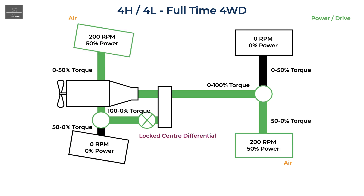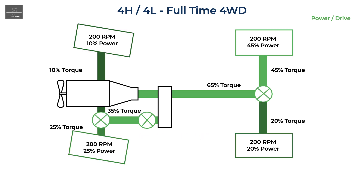Another example is a vehicle climbing a hill. With all differentials locked, say 65 percent of the torque is sent to the rear differential, which then splits at 20 percent to the rear left wheel and 45 percent to the rear right wheel. 35 percent of the torque is sent to the front differential, which splits at 25 percent to the front left wheel and 10 percent to the front right wheel. This depends on surface conditions and how much power can actually be put down. These values are just for indication purposes but are an example of what could happen in the real world.